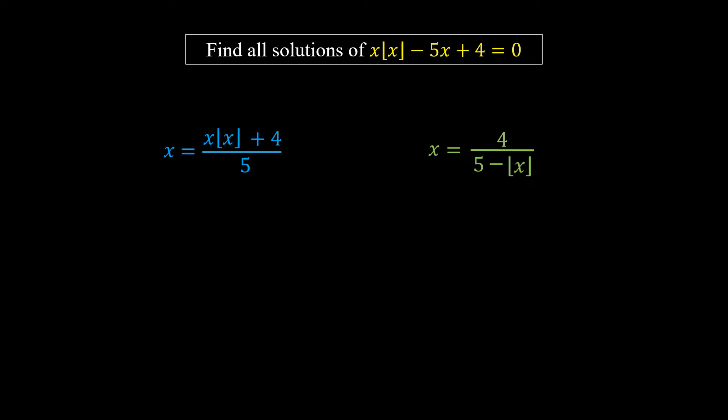Next, we should notice that x times the floor value of x is greater than or equal to 0, because x and the floor value of x share the same sign. So we have x·⌊x⌋ ≥ 0.